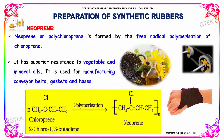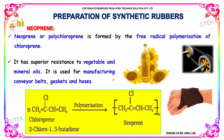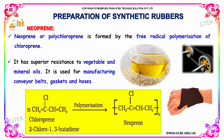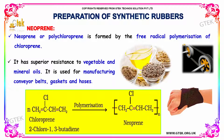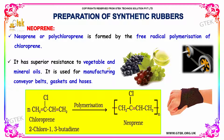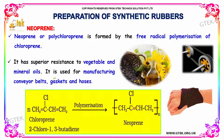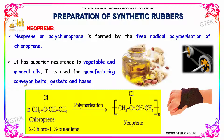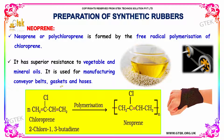Neoprene, or polychloroprene, is formed by the free radical polymerization of chloroprene. It has superior resistance to vegetable and mineral oils. It is thus used in the manufacturing of conveyor belts, gaskets, and hoses.